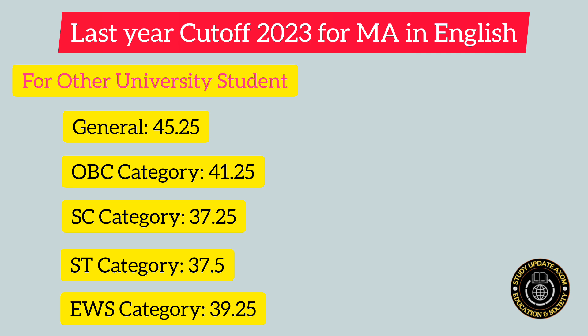Now let us learn about the last year cutoff for other university students — those who completed their graduation under a university other than Guwahati University. For General category the cutoff was 45.25. For OVC category it was 41.25. For SC category it was 37.25. For ST category including ST Hills and Plains it was 37.5. For EWS category the cutoff was 39.25.